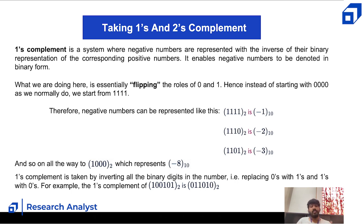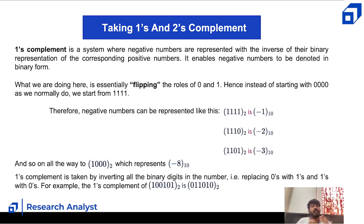One's complement is taken by inverting all the binary digits — replacing zeros with ones and ones with zeros. For example, the one's complement of 100110 is simply 011001: just flip each bit. That's all you need to do for one's complement.